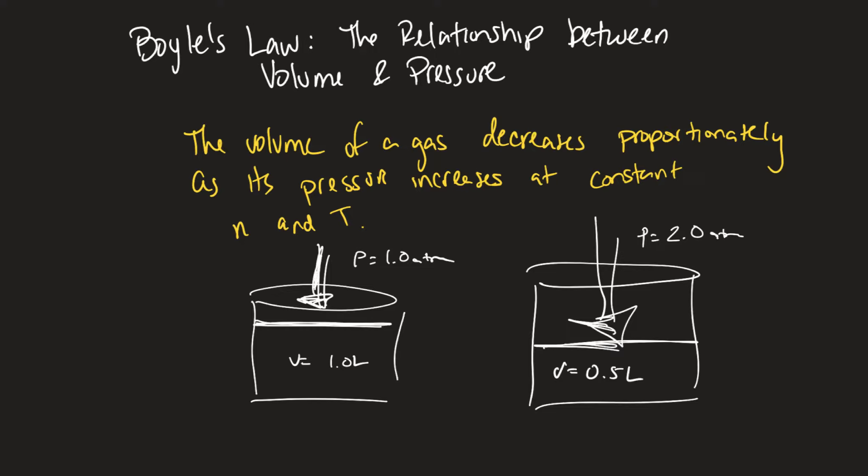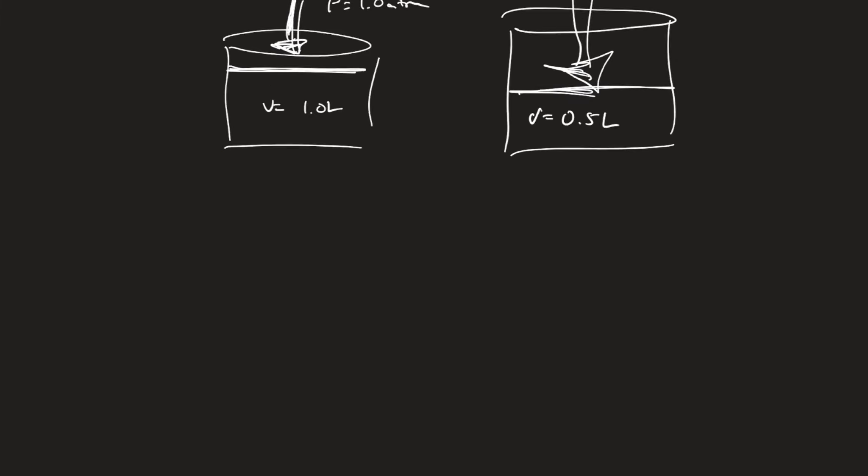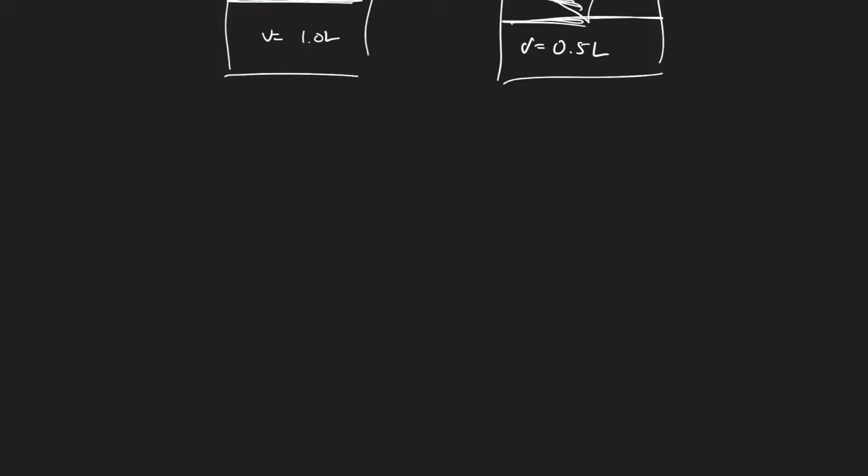There's an inverse relationship between volume and pressure. And so as one goes up, the other one goes down. So how do we show this mathematically? We say that P₁V₁ equals P₂V₂.